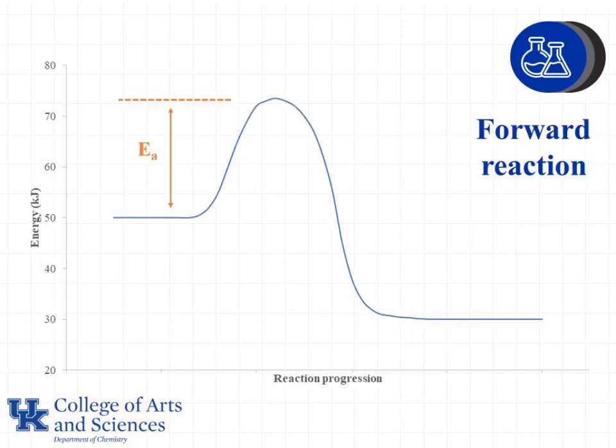Let's first look at this curve as a forward reaction. We have our activation energy marked from the previous slide. For the forward reaction, the reactants are on the left side of the curve and the products are on the right side of the curve. The activated complex is present at the peak of the hump in the middle for the activation energy.